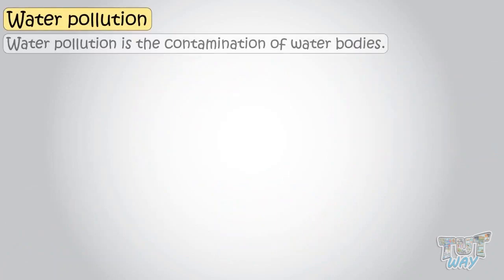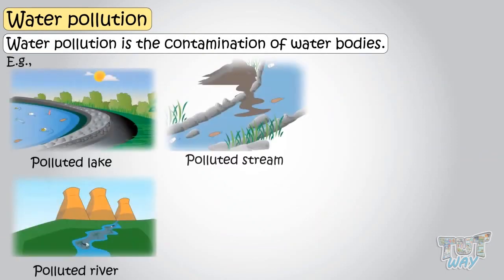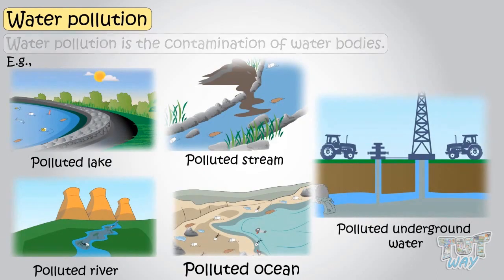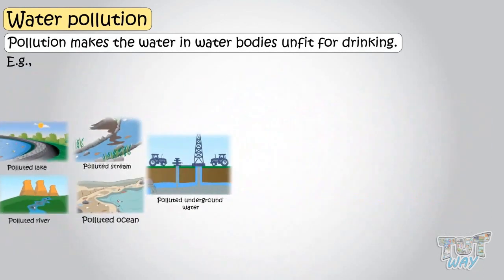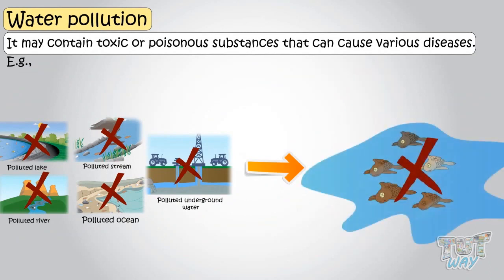Water pollution is a contamination of water bodies like lakes, rivers, streams, oceans, even the underground water. And this pollution makes the water in water bodies unsafe for use, as it may contain toxic or poisonous substances that can cause various diseases to those who consume it, and also leads to death of various aquatic organisms in it.